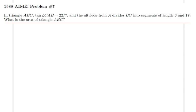Hello everyone, in this lecture we will be solving 1988 AIME problem number 7. In triangle ABC, the tangent of angle CAB is given as 22 over 7. The altitude from A divides line segment BC into lengths 3 and 17, and we would like to find the area of the triangle.